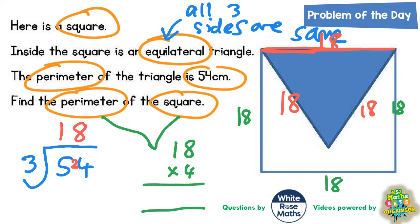Four times eight is 32, put the two in, carry the three, and four ones are four plus the three is seven. So, our final answer is that the perimeter of the square is 72 centimetres. Don't forget to put your units on, 72 centimetres.